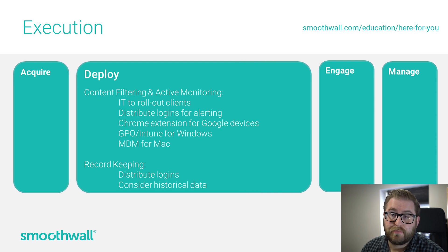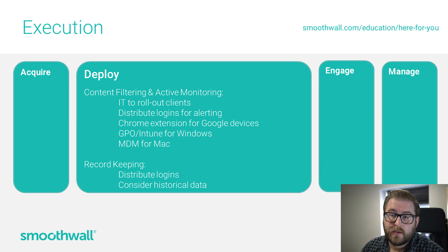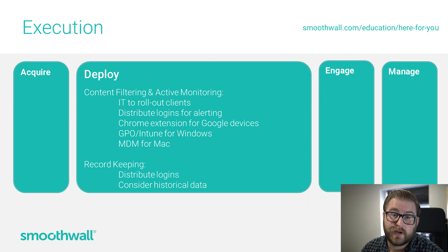So now we have the device — how do we deploy tools? Content filtering and monitoring are essentially delivered in the same way. They start off with IT, because IT needs to get this software installed onto these devices so that they can filter the network traffic and monitor what's on the screen and what the students are typing. Once that's been deployed, you can provide a login to DSLs and the safeguarding team for them to review the alerts being raised, or perhaps adjust the policies within them with the help of IT. But IT still have an ongoing responsibility to make sure the software is correctly installed and continues to operate.